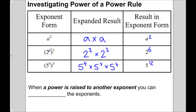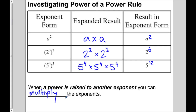Looking at these results: a 3 and a 2 turned into 6, and a 4 and a 3 turned into 12. Now, 3 times 2 gives me 6, and 4 times 3 gives me 12. So here we have another rule — we're not adding or subtracting the exponents, but when a power is raised to another exponent, you multiply the exponents. So now we've got three rules: add, subtract, or multiply the exponents. The challenge is knowing when to do which.